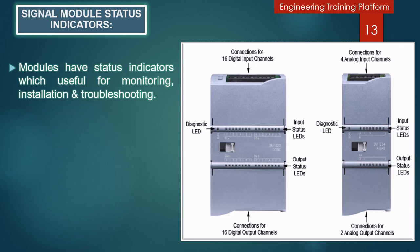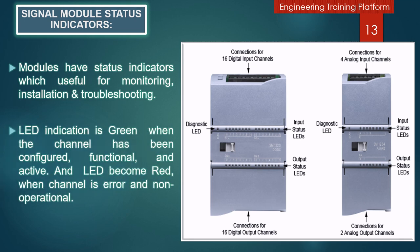You can see in the picture two S7-1200 signal module status indicators — one with a combination of digital input/output signal modules, and one with a combination of analog input/output signal modules. Signal modules have LED status indicators that are useful for system installation, monitoring, and troubleshooting. Both modules have a status LED for each channel. The digital channel status LED is green and turns on when the input or output is on. The analog channel LED is green when the channel has been configured and is active, and red when there is a channel error. Both modules also have a diagnostic LED that is green when the module is operational and red when the module is defective or non-operational.